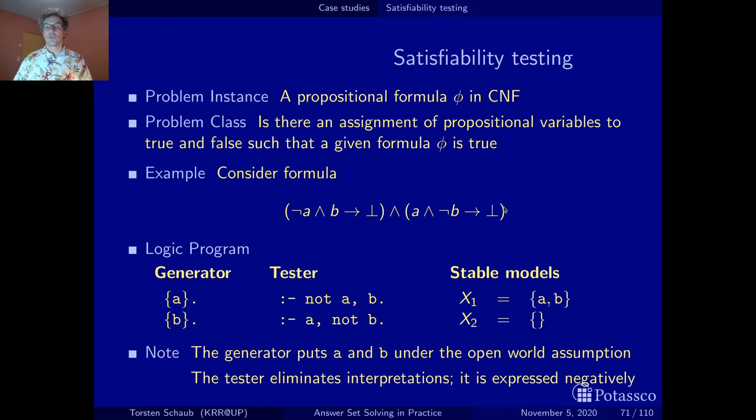You see, as long as you have just conditions like integrity constraints, where you don't talk about derivability, things are very close to classical logic. Such transformations work in classical logic. Don't be misled that this always works with arbitrary formulas under the stable model semantics. It works with integrity constraints. But in this way, you nicely saw how integrity constraints can be seen as conditions expressed in classical logic. You saw the relationship.